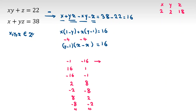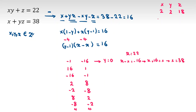Next case: (y minus 1) = -1, so y = 0, and z minus x = -16. Replacing y = 0 in the first equation gives z = 22. Then x = z + 16 = 38. Checking both equations: 22 = 22 ✓ and 38 = 38 ✓. So (x, y, z) = (38, 0, 22) is valid.